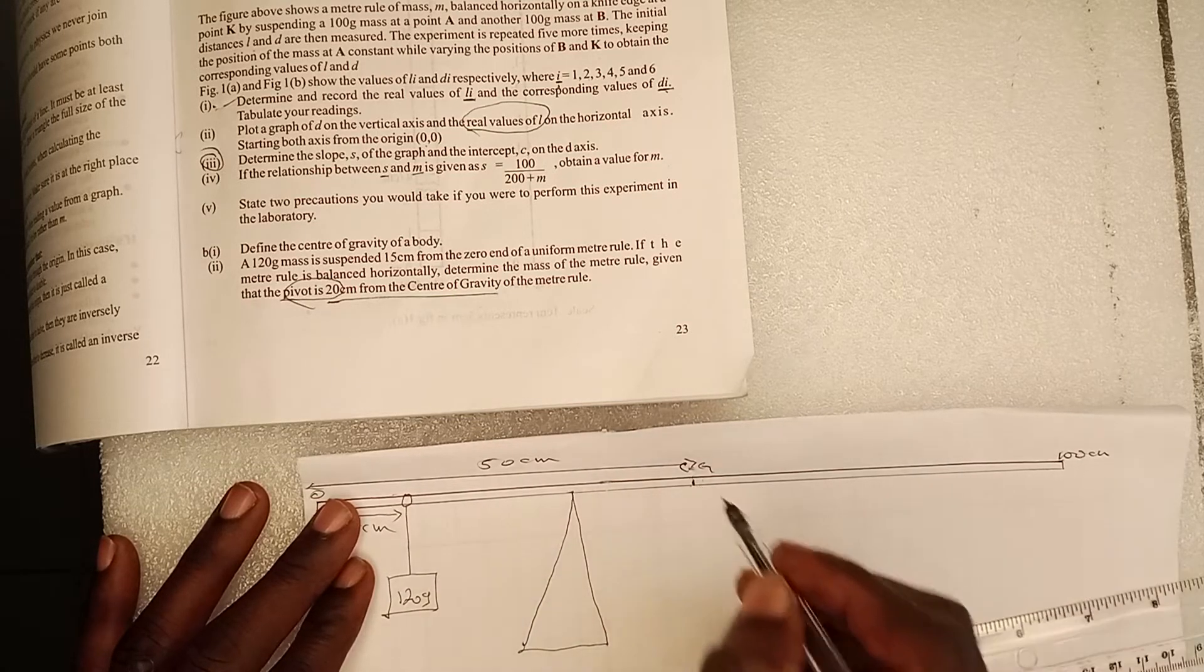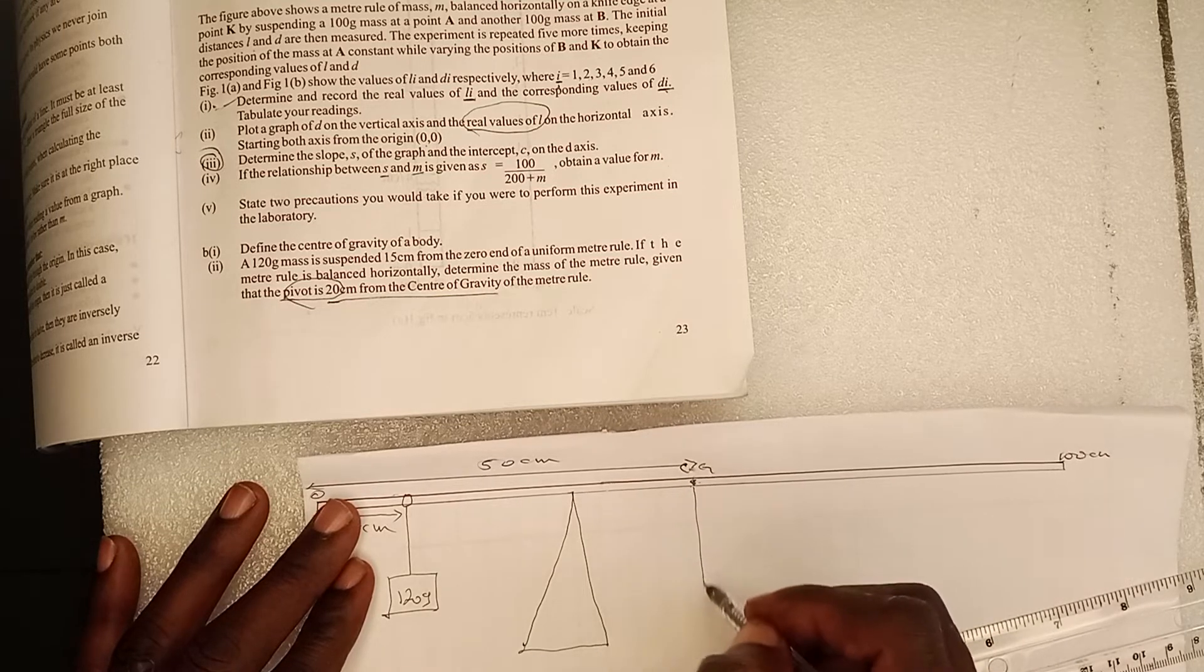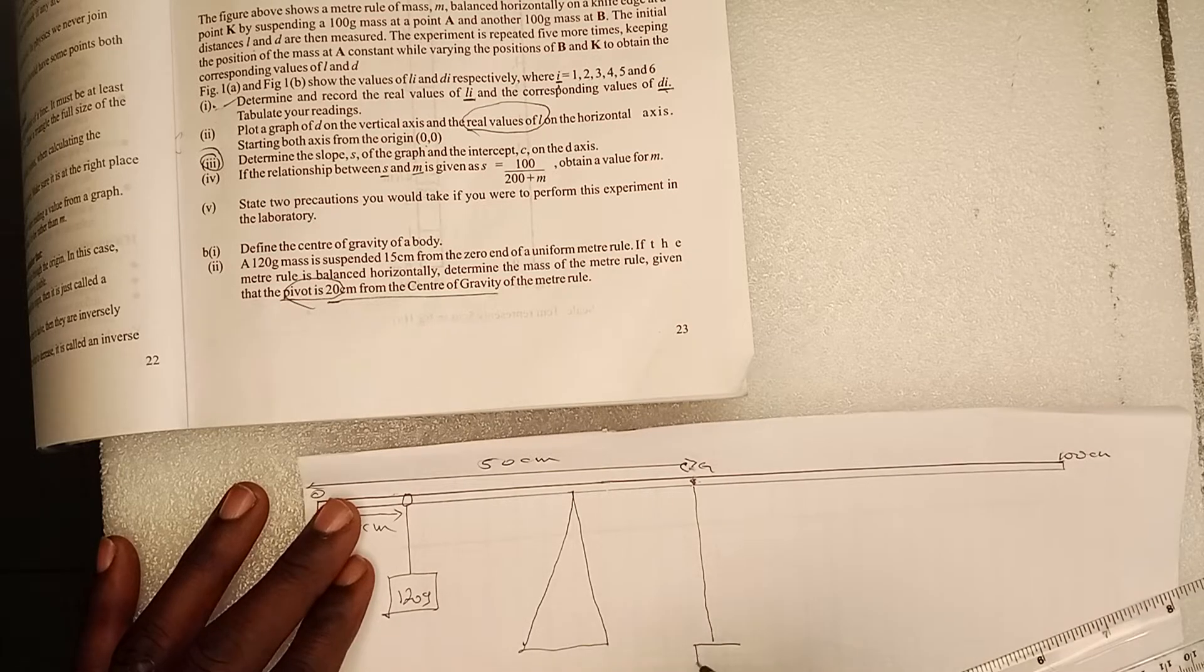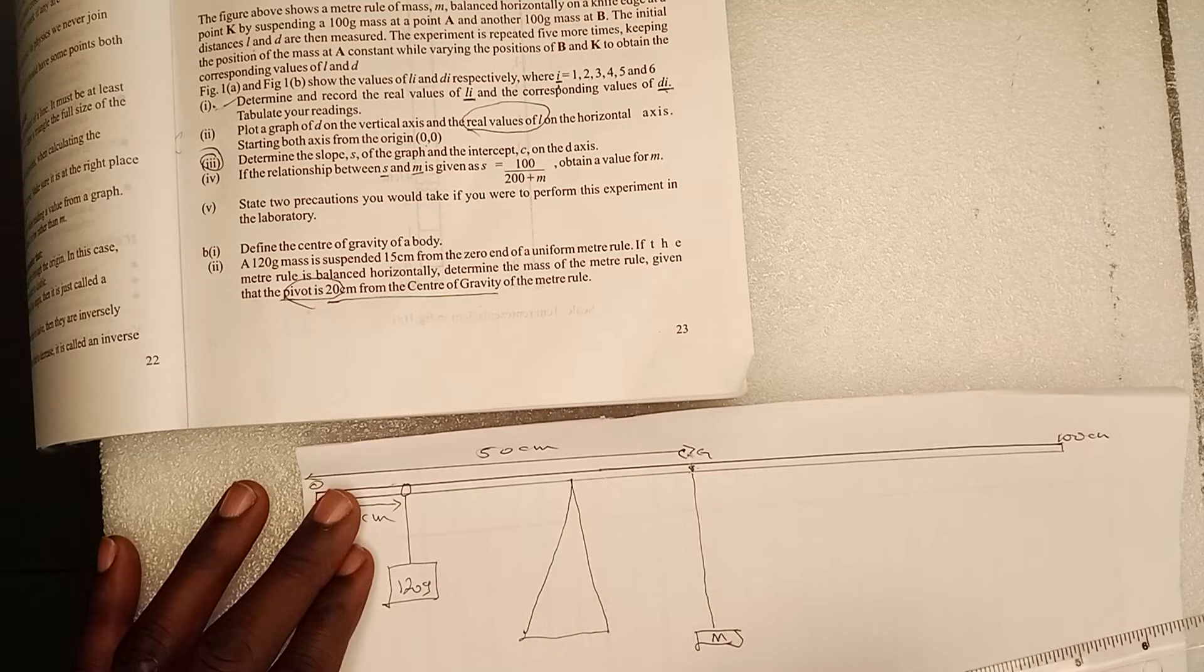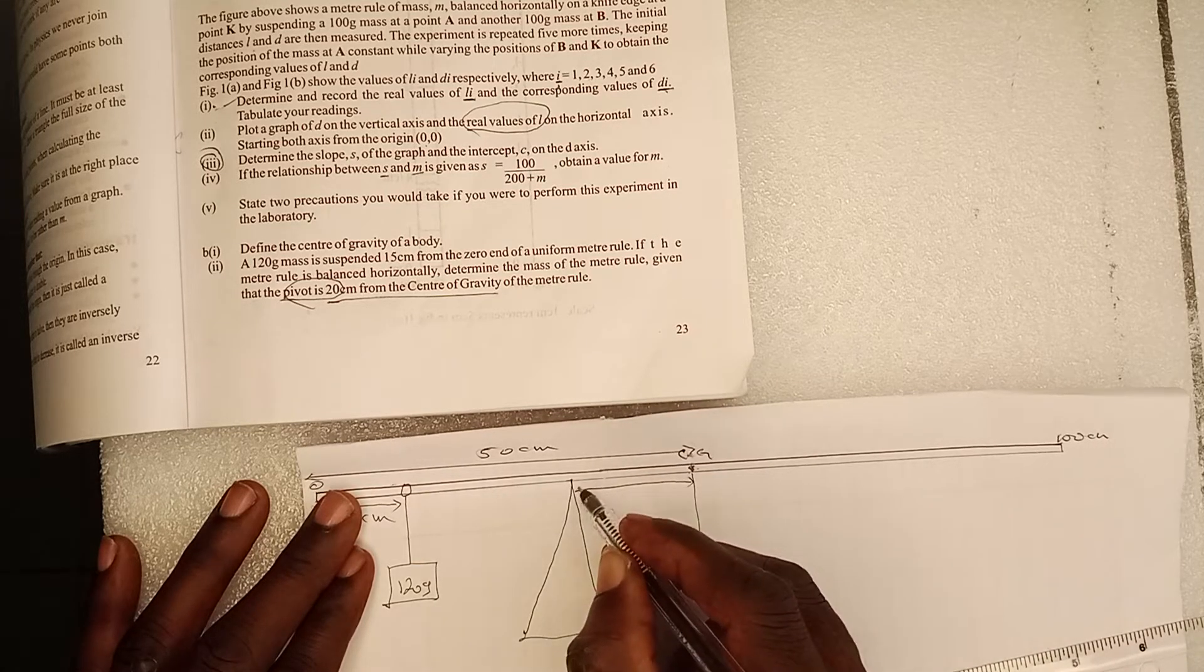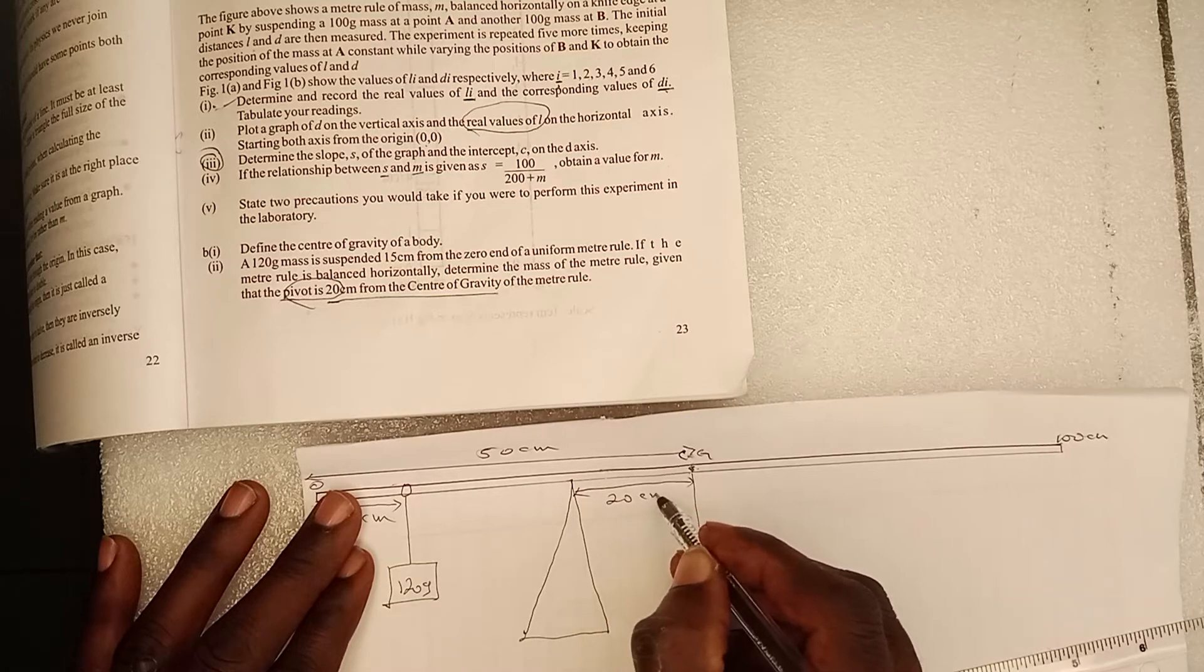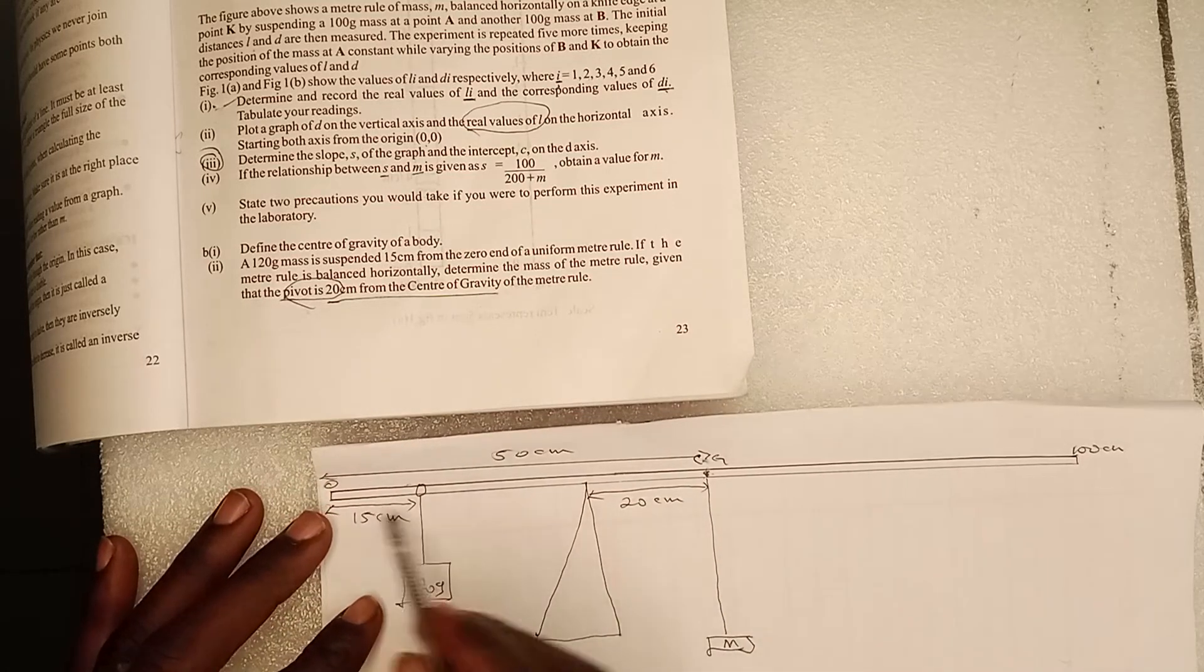And then don't forget that the weight of the ruler is at the center of gravity. This is what we are looking for, the mass of the ruler. But then the pivot is 20 cm from this point. So to get this point...